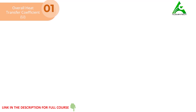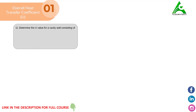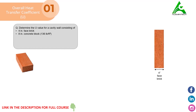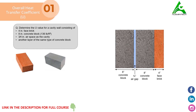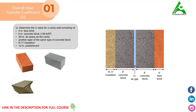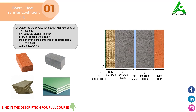We'll do a sample problem to understand how to find the value of U when information about the components used in the construction of a wall is provided. The question says: Determine the value of U for a cavity wall consisting of a 4-inch face brick, 8-inch concrete block, 3/4-inch air space as the cavity, another layer of the same type of concrete block, R-17 insulation, and half-inch plasterboard. Based on this information, we'll find the value of U with the help of charts and tables provided by ASHRAE.